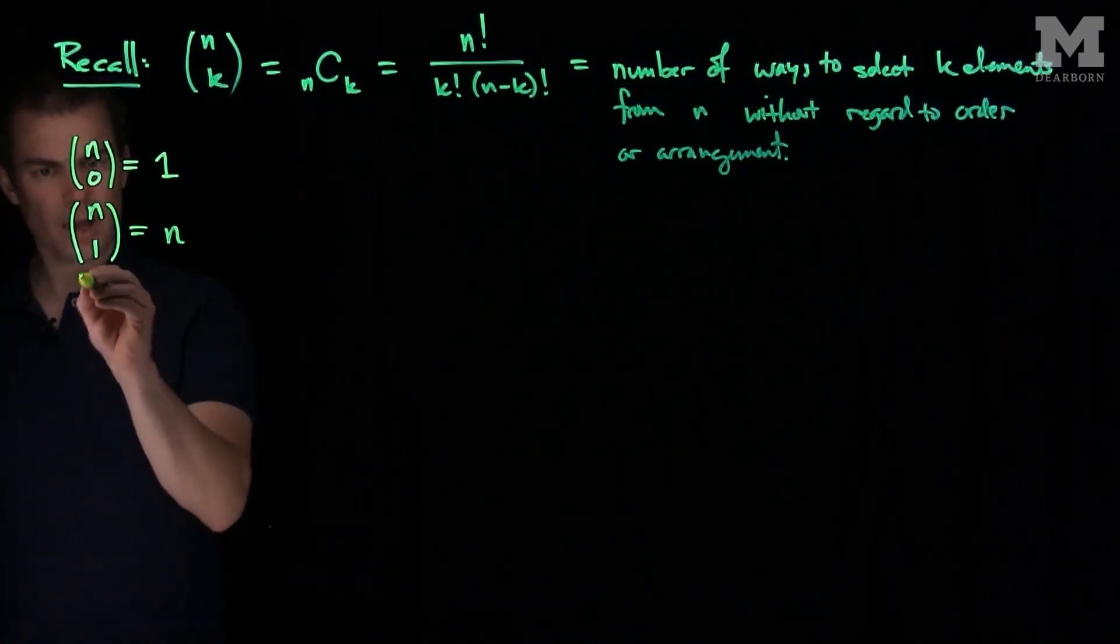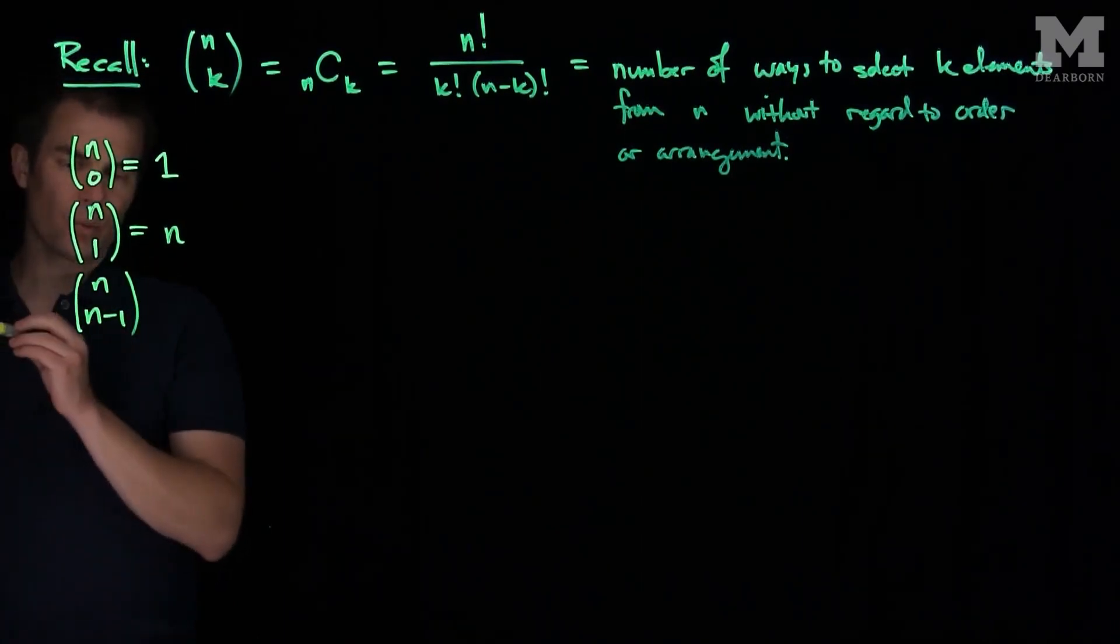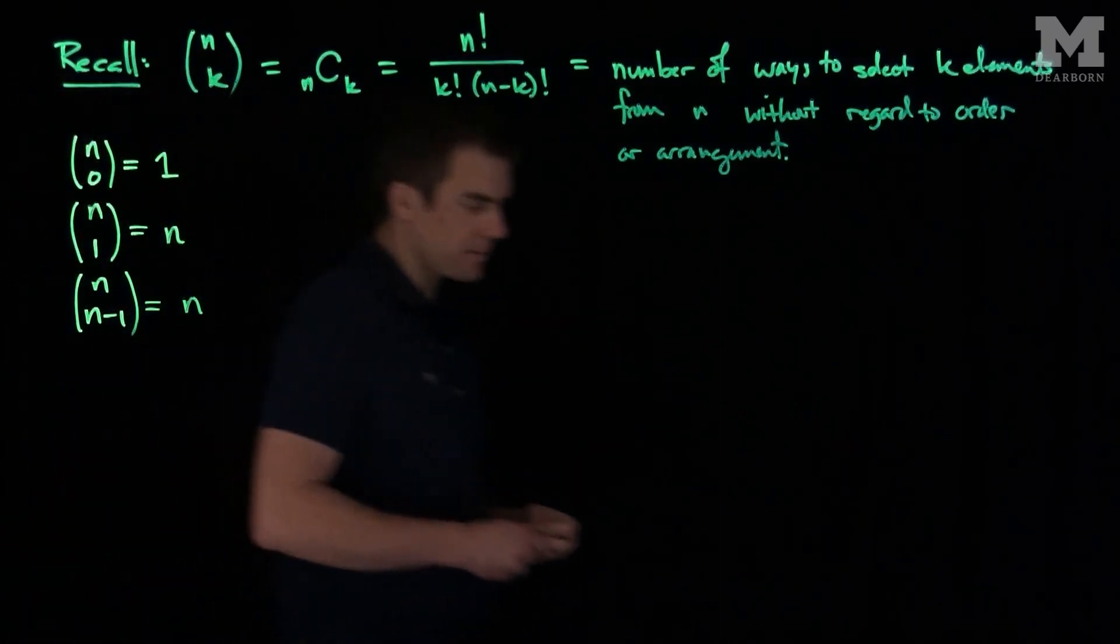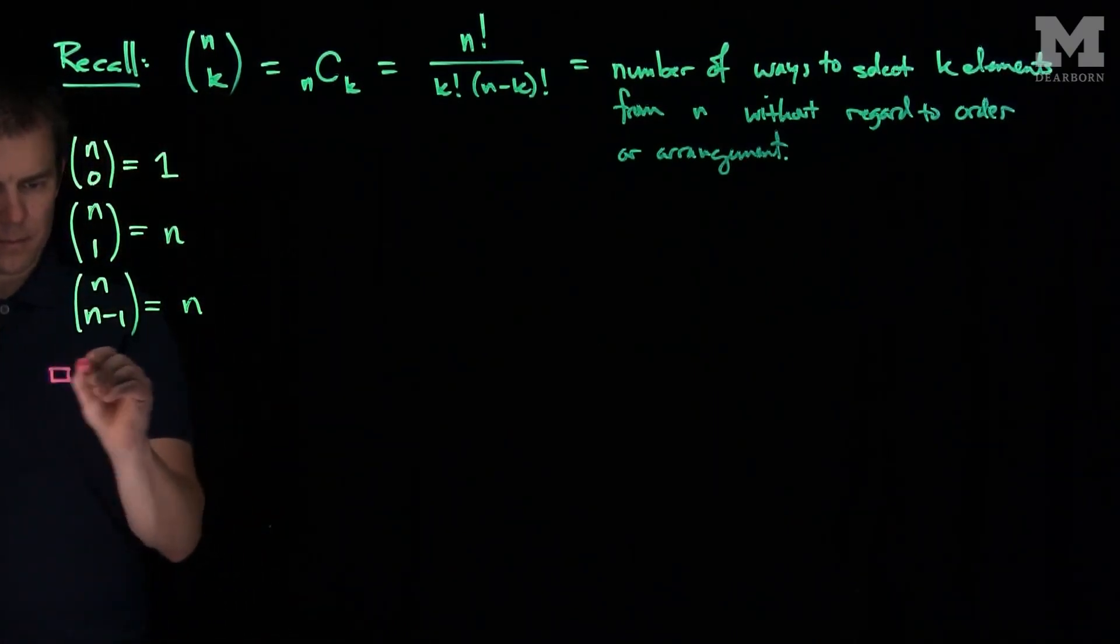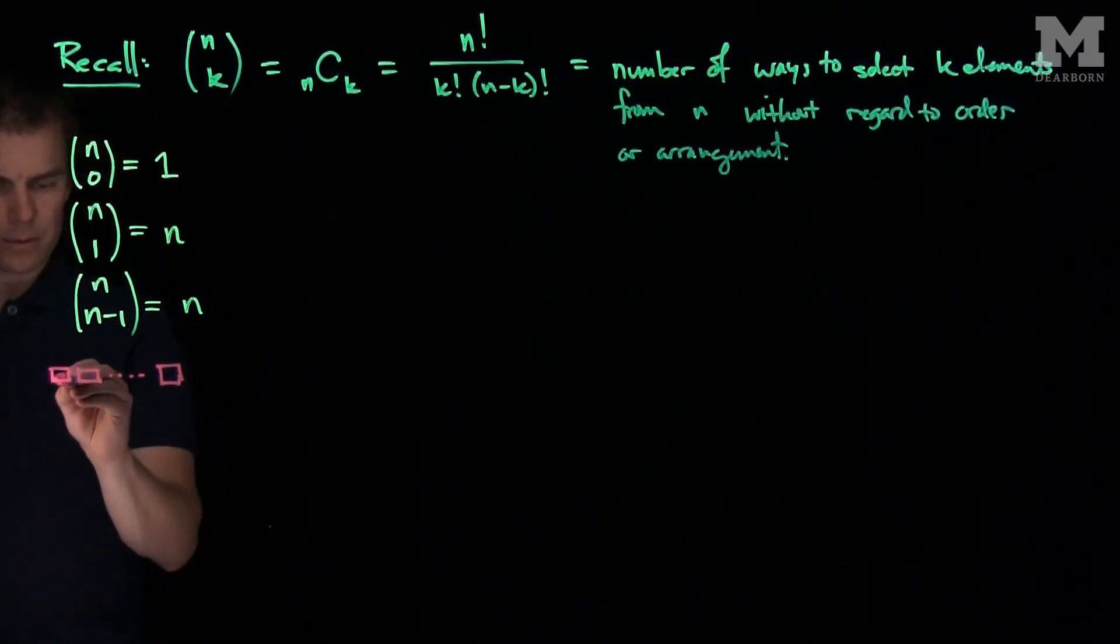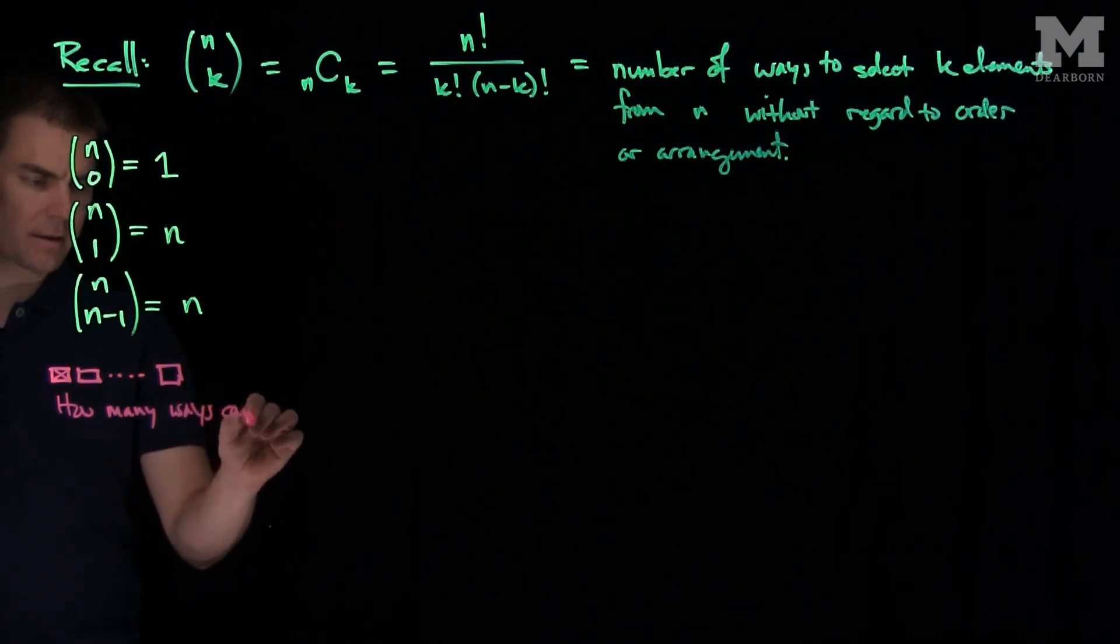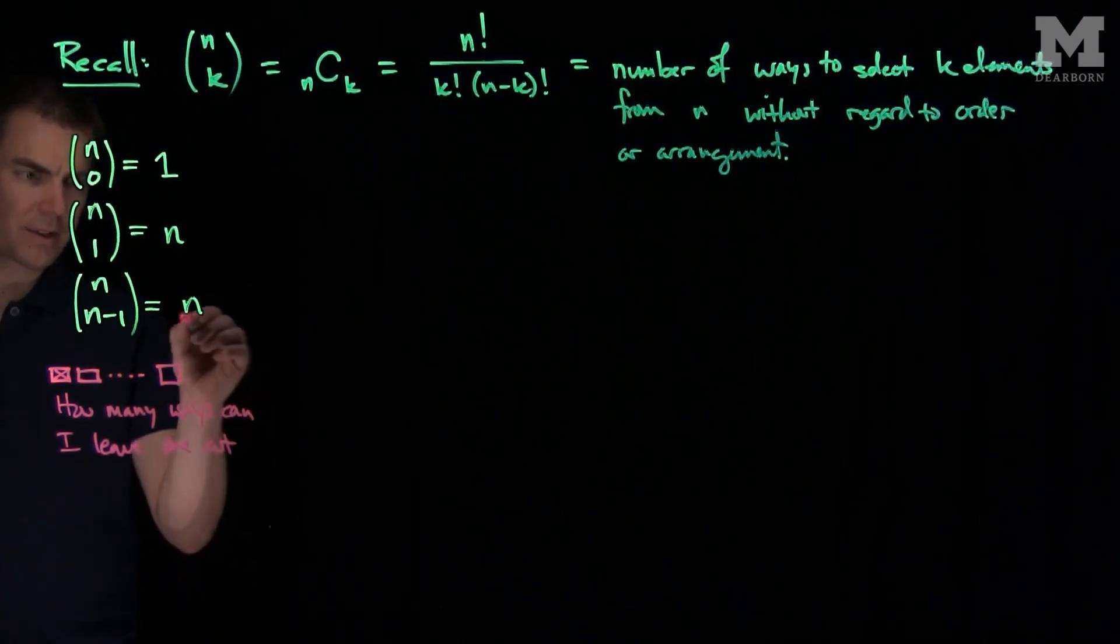Analogously, if I look at n choose (n-1), that's how many different ways I can choose n-1 elements from n. This should also be equal to n for the following reason. If I have a collection of n elements and I wish to choose n-1 of them, I'm leaving one out. So the question becomes: how many ways can I leave one out? And there's exactly n ways to do that.